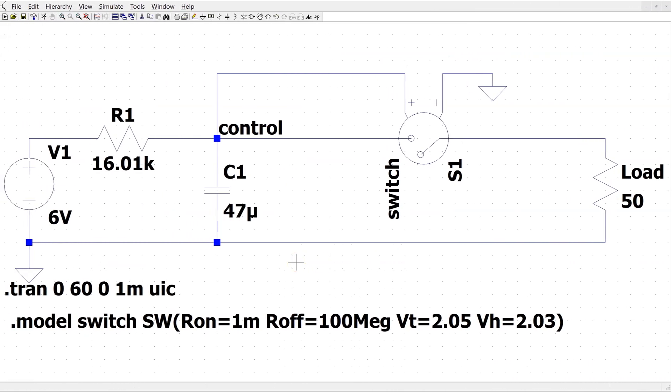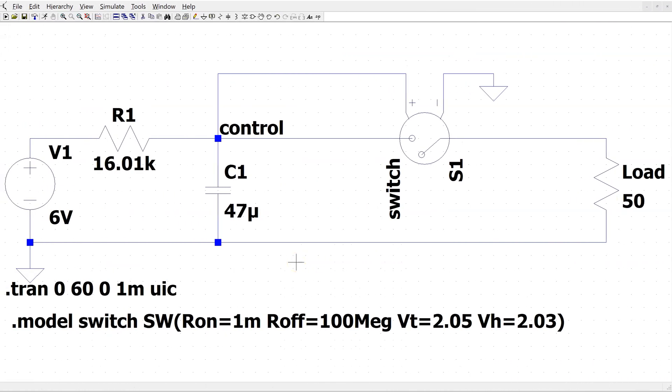This is the circuit implemented in LTSpice. The voltage across the capacitor is providing the control voltage for the switch controller. The 50 ohm resistance is representing the human patient.